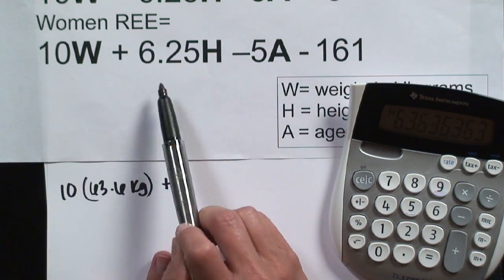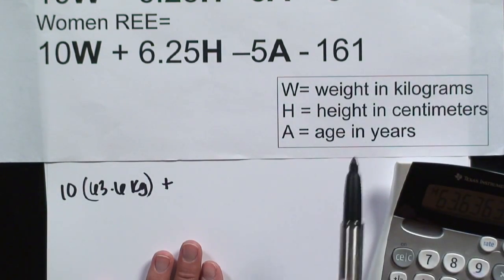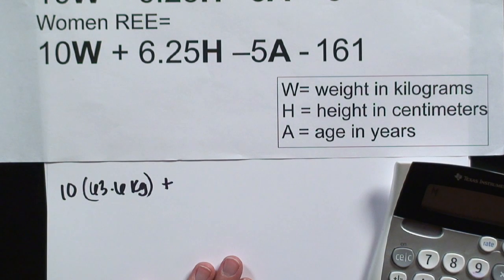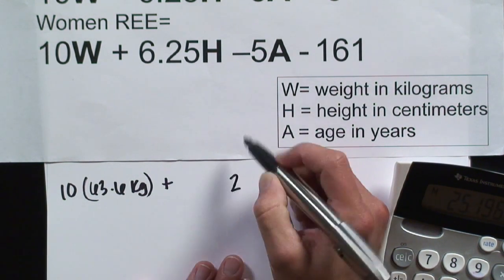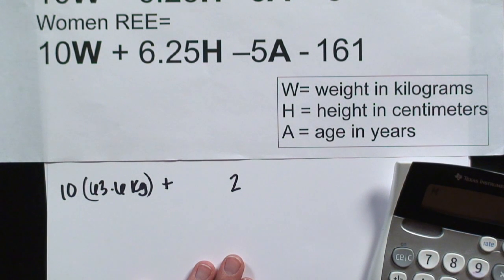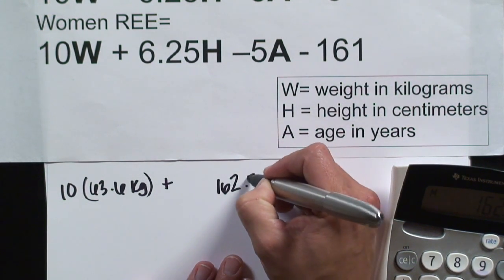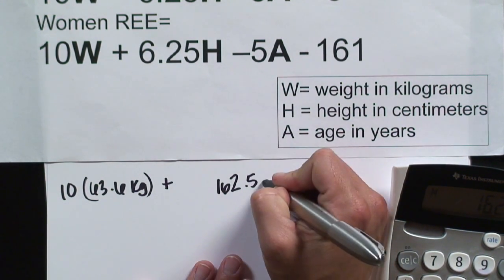Then I need to look at my height. Now height is in centimeters. I know that I'm 5'4, so that's 64 inches, multiplied by 2.54 — that's the conversion factor — which gives 162.5 centimeters. And we'll multiply that by 6.25.